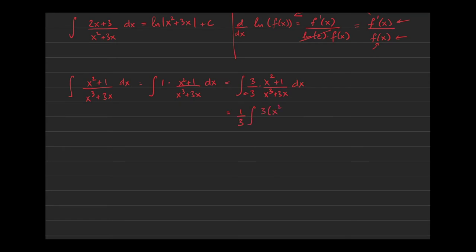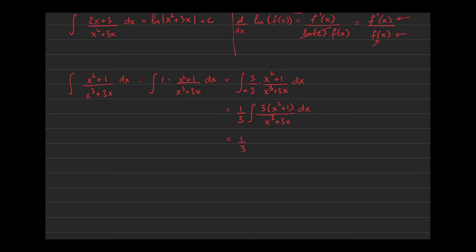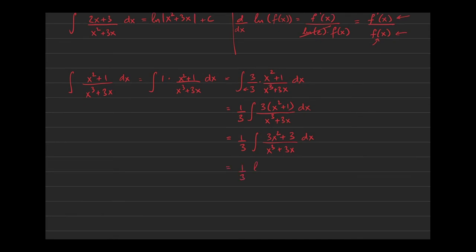I keep the 3 in the numerator and push the 1/3 to the outside. Distributing the 3 gives us (3x² + 3) over (x³ + 3x) dx. Now the derivative of the denominator is exactly what we have in the numerator — no more constant fudging needed. So this would have come from the derivative of ln|x³ + 3x|, giving us ln|x³ + 3x| + C.